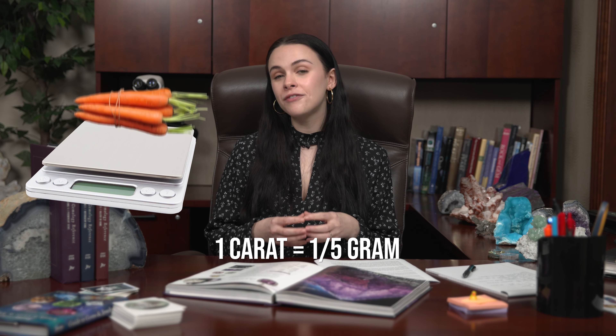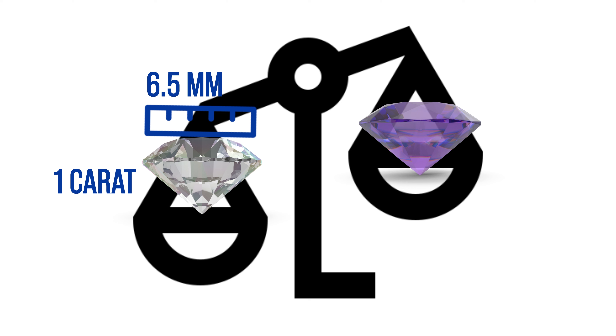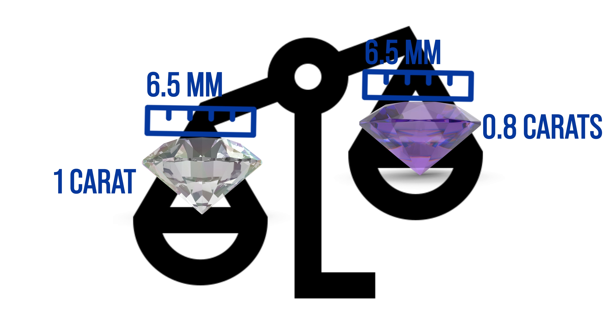Carat is the weight of a stone. One carat is equal to a fifth of a gram, and there are 100 points in a carat. Remember, however, that carat weight does not equal size. Gemstones have different densities, so two gemstones of the same carat weight can be different sizes. For example, a one carat round brilliant diamond is going to be about 6½ millimeters in diameter, but a 6½ millimeter amethyst of the same cut will only be about 0.8 carats, or 80 points, because the amethyst is less dense.